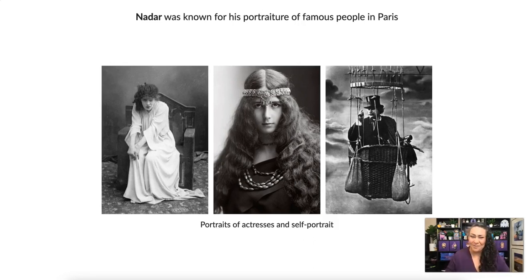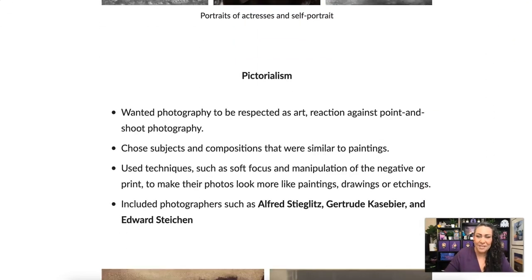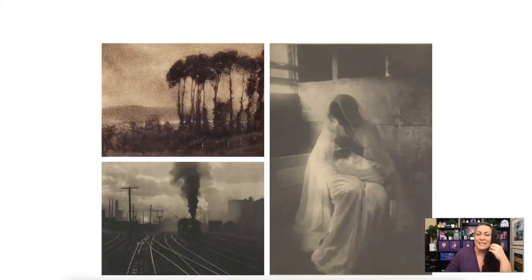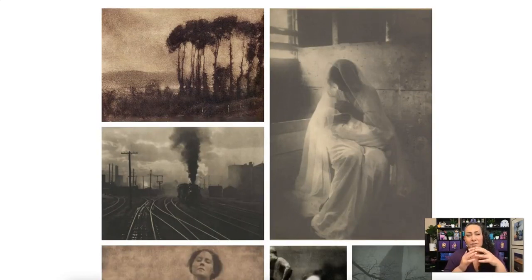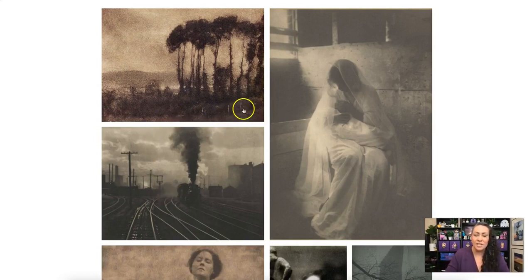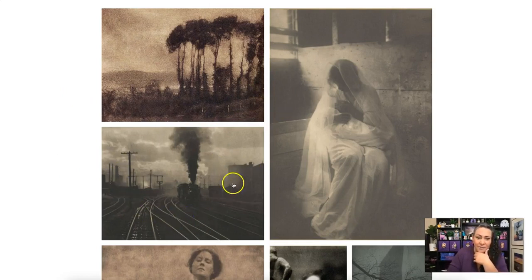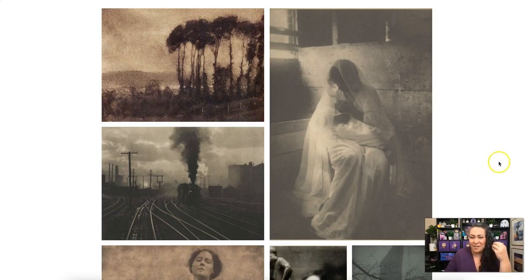Pictorialism was basically photographers trying to prove to the art world that photography was an art by creating images that looked like paintings or drawings. They scratched up negatives, painted on negatives, and used soft focus to create a soft, ethereal feel. This photograph in particular is very similar to some Manet paintings of trains at the same time in Paris — they were very much feeding off each other.